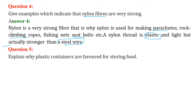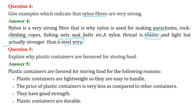Explain why plastic containers are favored for storing food. Plastic containers are favored because they are lightweight and easy to handle. Their pricing is less compared to other containers, they have good strength, and the containers are durable.